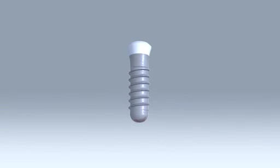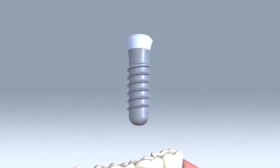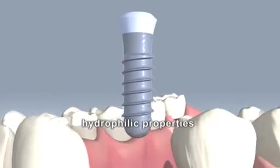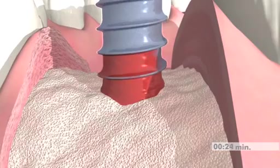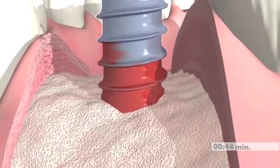When the activated implant is inserted into the bone, its hydrophilic properties become apparent as soon as there is contact with the blood. The implant surface attracts the blood right to the micropores at the surface.